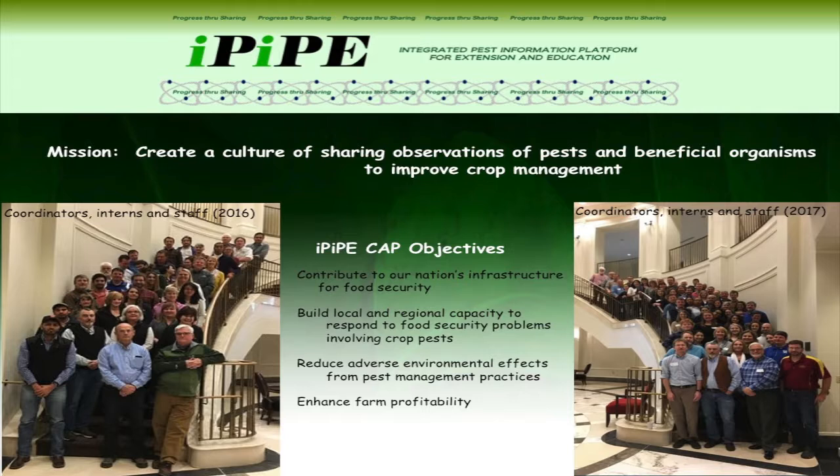IPIPE is all about increasing sharing of observations — observational data on pests and beneficial organisms in agriculture. Hundreds of people are out there collecting thousands of observations during the growing season in our country, and they're using those data for management decisions on their farms. But these data are not really shared in real time or near real time with others in ways that they could be useful. IPIPE is about creating a culture of sharing these observations to improve crop management.